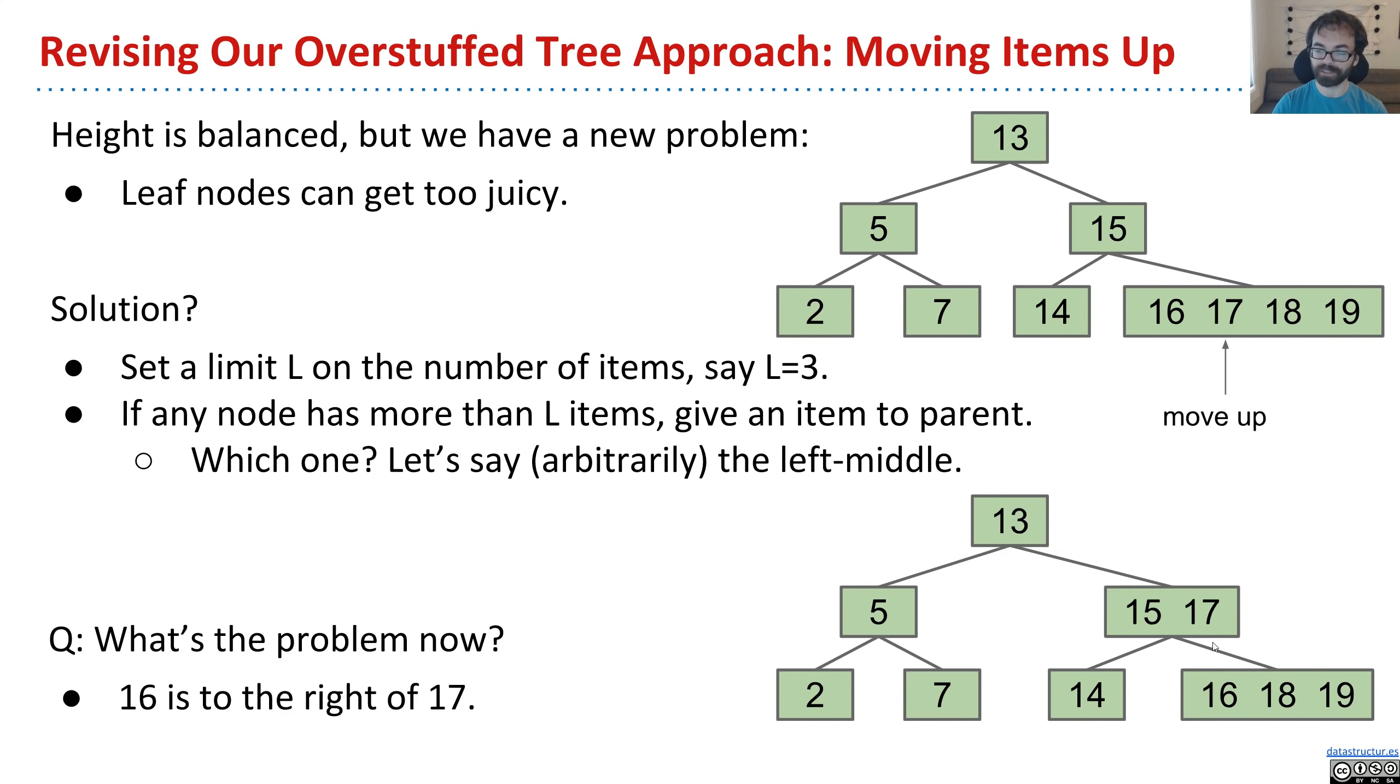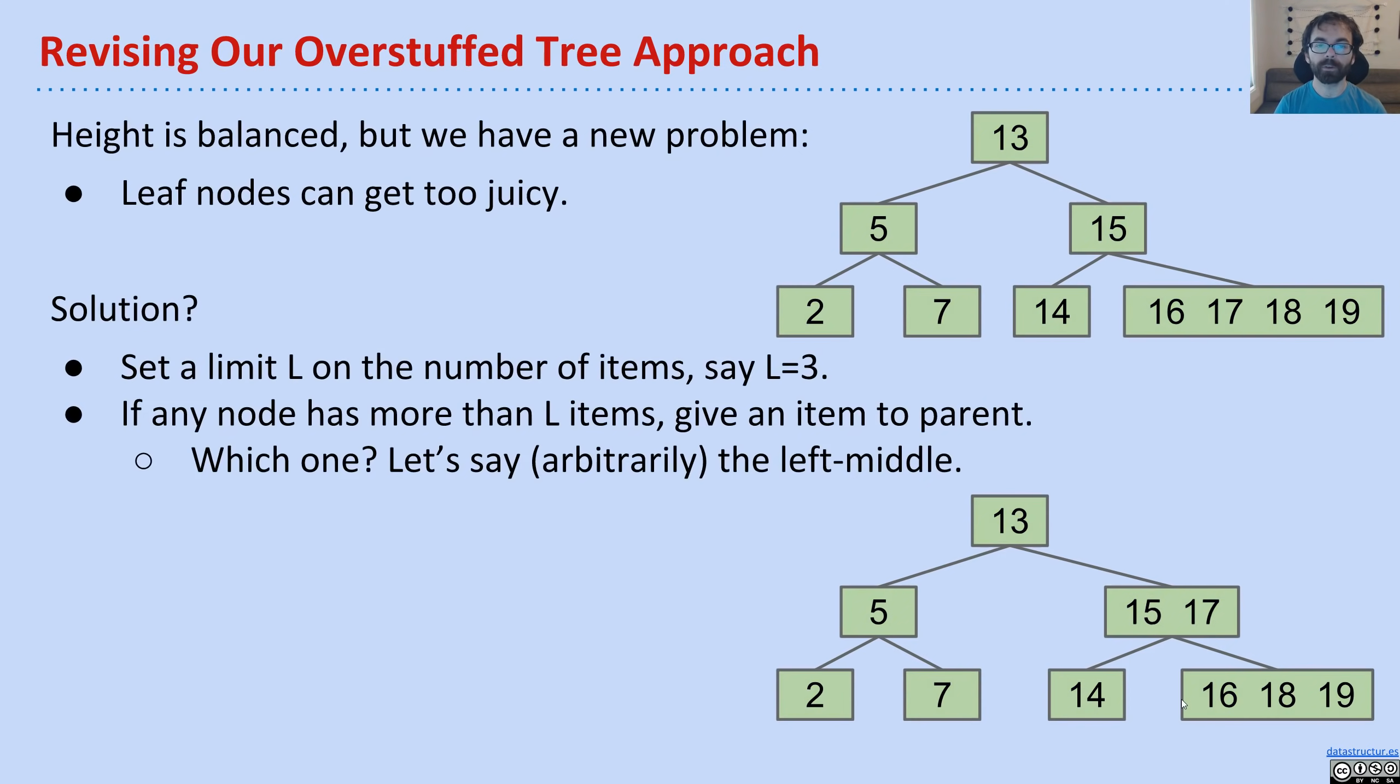which is to the right of 17. Now, this is no longer a binary search tree, because I have multiple items in each node. But it still just feels aesthetically bad to me. There should not be a 16 lurking down here. So let's try and fix it.